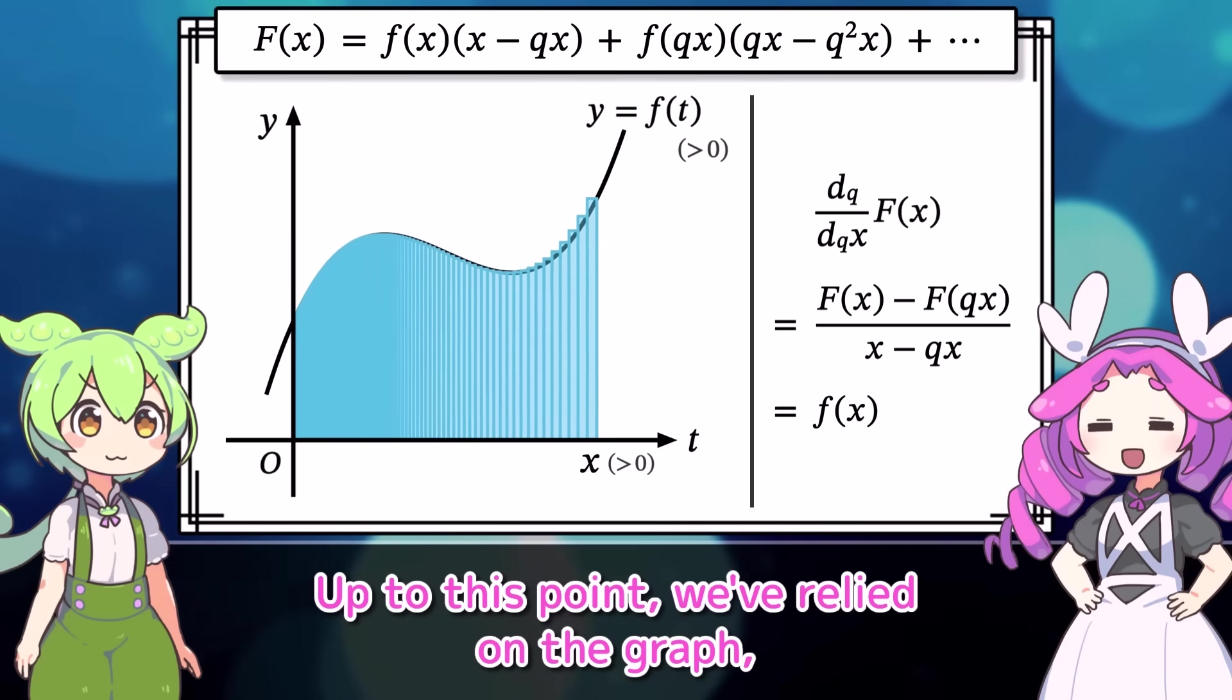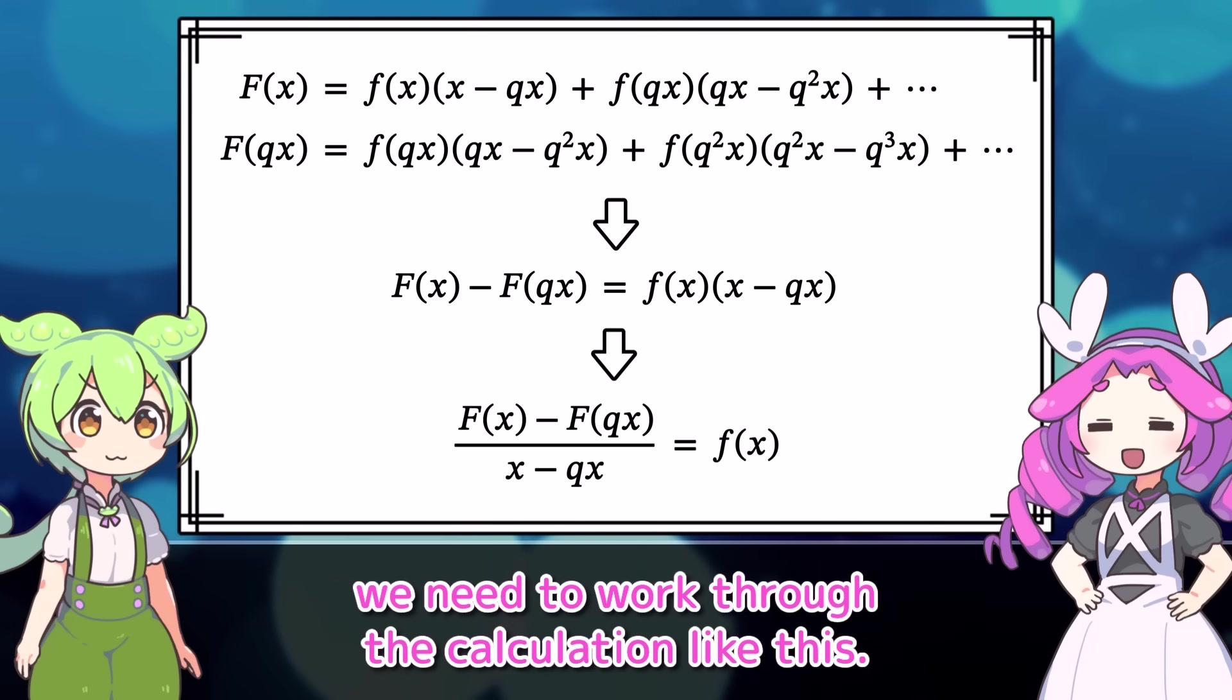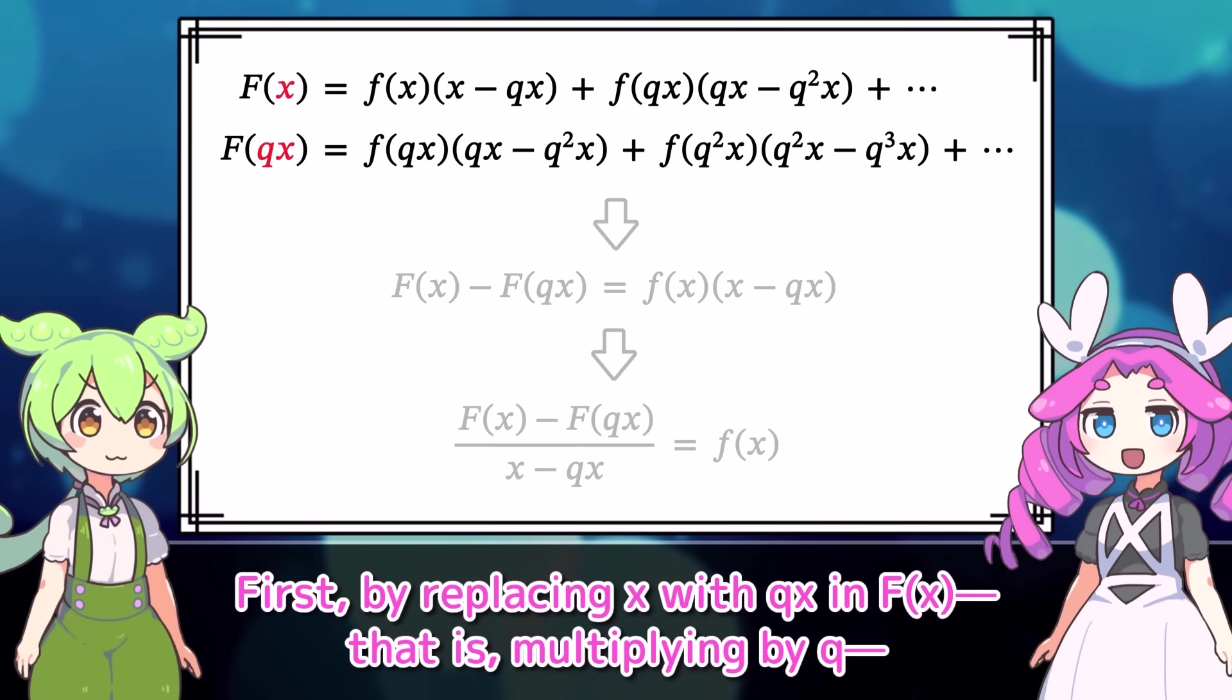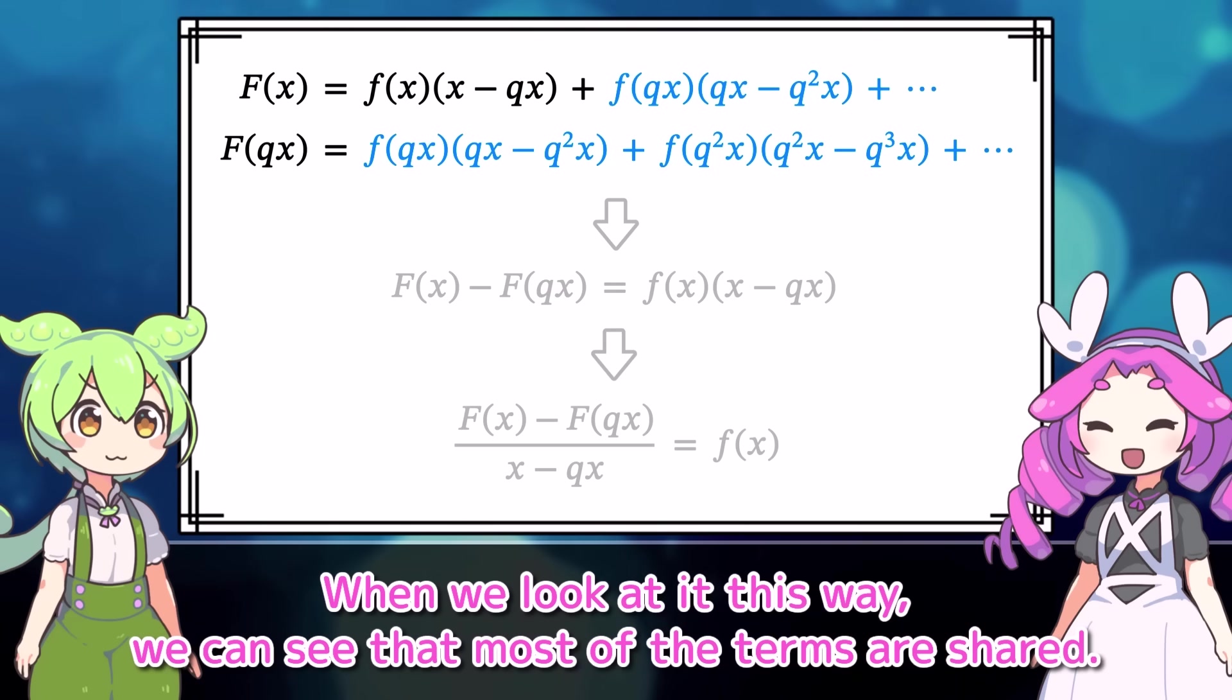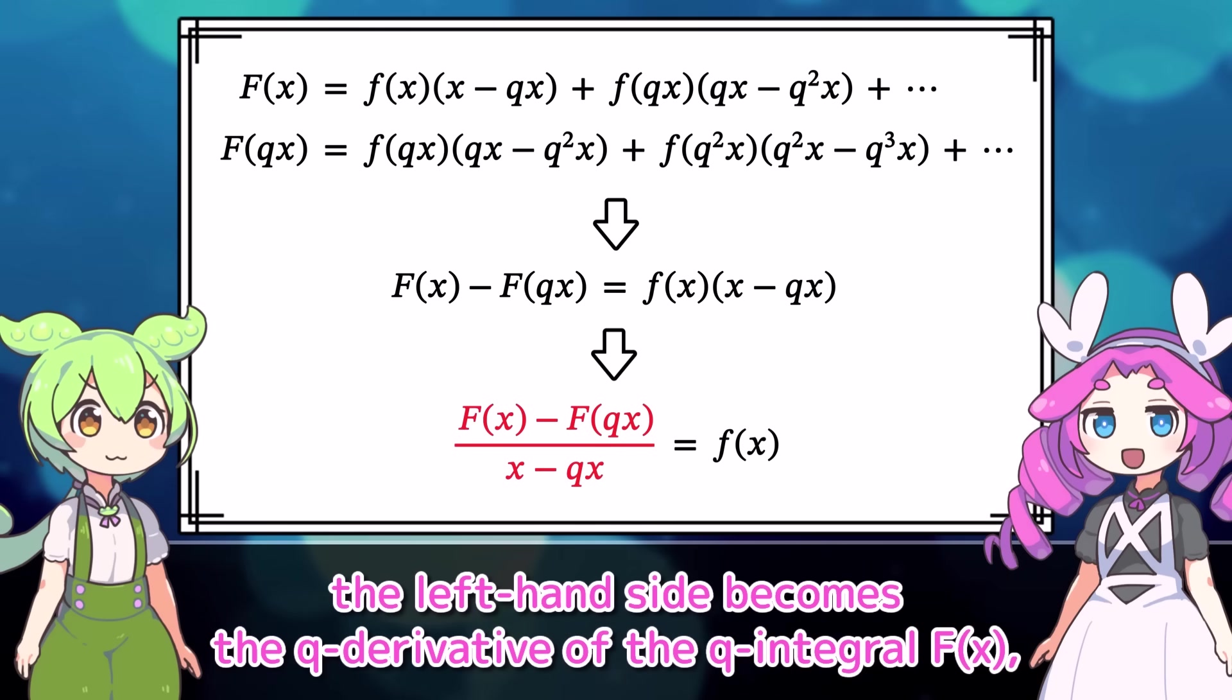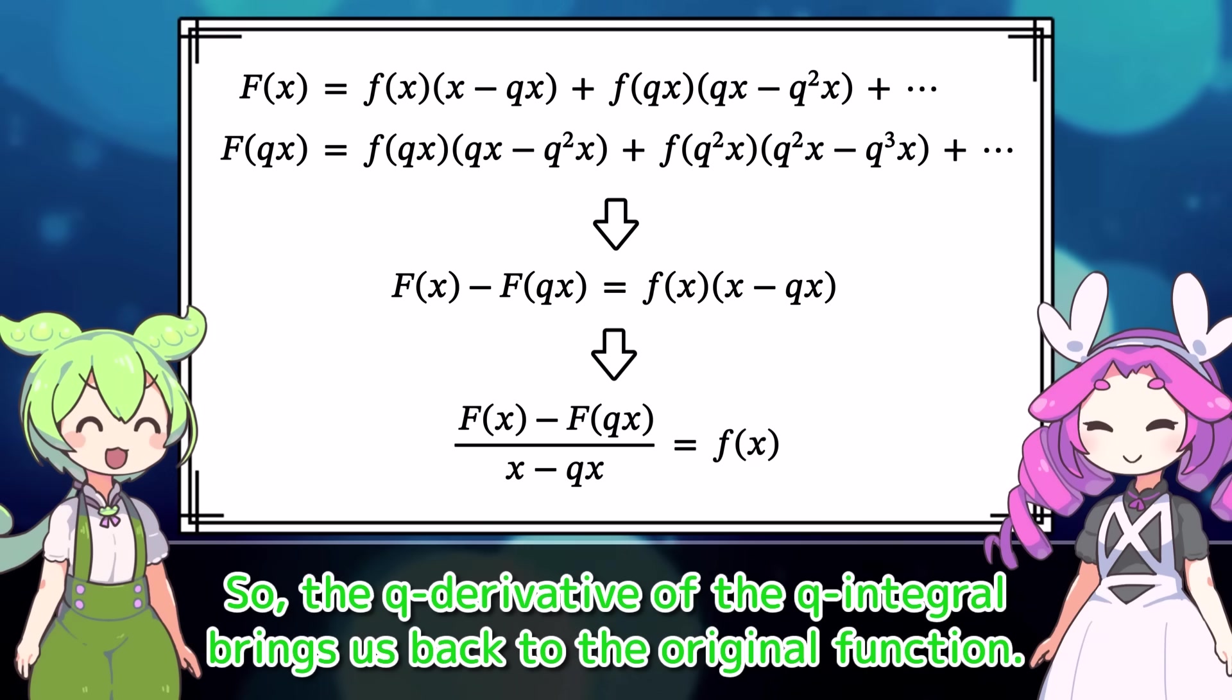Up to this point, we've relied on the graph, but to properly prove the relationship between the q derivative and the q integral, we need to work through the calculation like this. Essentially, this is just expressing the same idea as before, so I'll go through it briefly. First, by replacing x with qx in capital F of x, that is, multiplying by q, we obtain capital F of qx. When we look at it this way, we can see that most of the terms are shared. Therefore, when we subtract, only this part remains. Then if we divide both sides by x minus qx, the left-hand side becomes the q derivative of the q integral capital F of x, and the right-hand side becomes the original function F of x. So, the q derivative of the q integral brings us that to the original function.